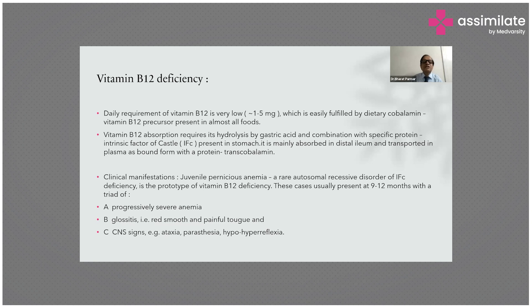Clinical manifestations of B12 deficiency due to deficiency of intrinsic factor: juvenile pernicious anemia is a rare autosomal recessive disorder with intrinsic factor (gastric) deficiency. This is the prototype for vitamin B12 deficiency and usually presents at 9 to 12 months with a triad of progressive severe anemia, glossitis (red, smooth, and painful tongue), and CNS signs including ataxia, hypo- and hyperreflexia.